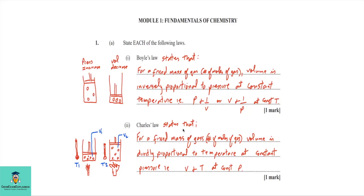For Charles' Law, it states that for a fixed mass of gas, volume is directly proportional to temperature at constant pressure. The expression is volume is directly proportional to temperature at constant pressure. The drawing on the sides shows that if you increase temperature, the volume will increase, hence volume and temperature are directly proportional to each other at constant pressure.